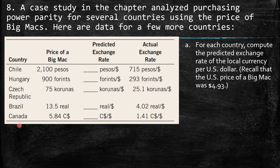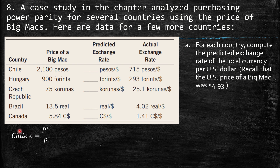Question 8: a case study in the chapter analyzes purchasing power parity using the price of Big Macs. We have data for five countries showing Big Mac prices in local currency, the predicted exchange rate we need to compute, and the actual exchange rate. For each country, compute the predicted exchange rate of local currency per US dollar. The US price of a Big Mac was $4.93. For Chile, we find the predicted exchange rate using the Chilean price of 2100 pesos over 4.93.